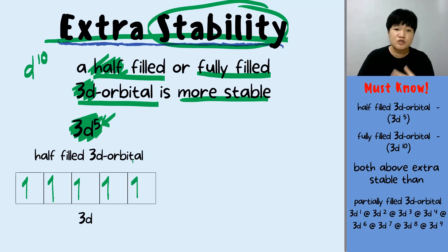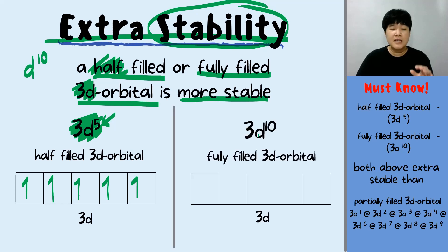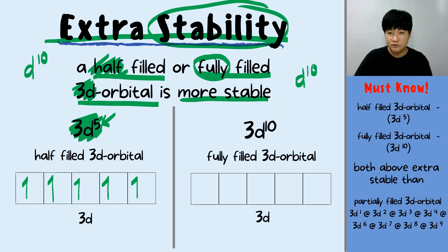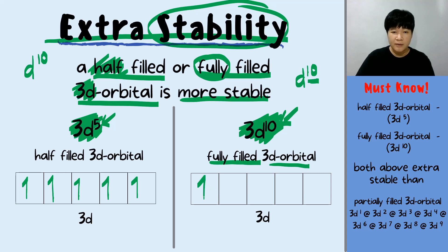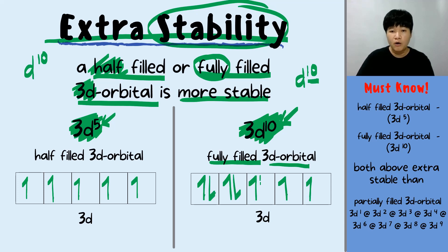Another condition for extra stability is the fully-filled 3d orbital. Knowing that the d orbital maximum has 10 electrons, the fully-filled 3d orbital is 3d10. We have 10 electrons in this fully-filled 3d orbital, and the orbital diagram of the fully-filled 3d orbital shows every box having two electrons, or a pair of electrons. So both the half-filled 3d orbital and the fully-filled 3d orbital give you extra stability.